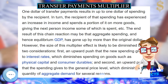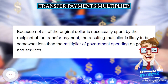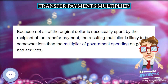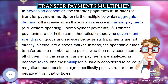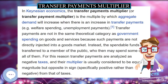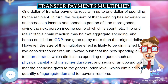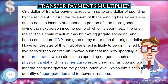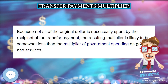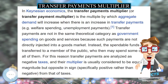One dollar of transfer payments results in up to one dollar of spending by the recipient. In turn, the recipient of that spending has experienced an increase in income and spends a portion of it on more goods, giving the next person income some of which is spent, and so on. The end result of this chain reaction may be that aggregate spending, and hence equilibrium GDP, has gone up by more than the original dollar.